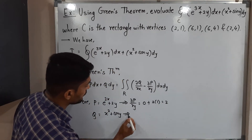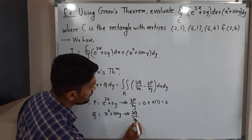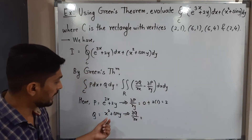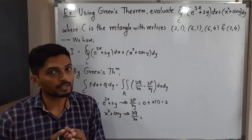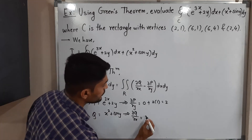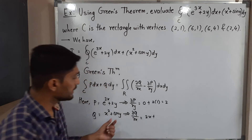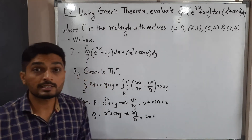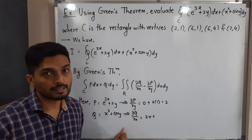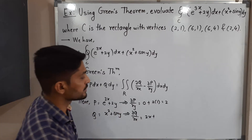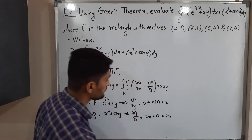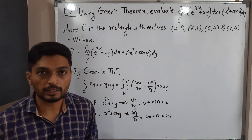Now let us find ∂Q/∂x. We differentiate x² + sin y with respect to x. The derivative of x² is 2x, and the derivative of sin y with respect to x is 0, since there is no x. So ∂Q/∂x = 2x.